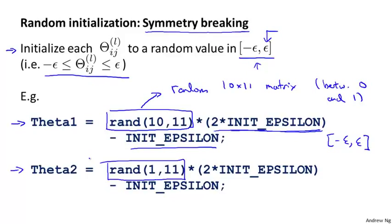To summarize, to create a neural network, you should randomly initialize the weights to small values close to zero between minus epsilon and plus epsilon. Then implement backpropagation, do gradient checking, and use either gradient descent or one of the advanced optimization algorithms to try to minimize J of theta as a function of the parameters theta, starting from this randomly chosen initial value. By doing symmetry breaking, hopefully gradient descent or the advanced optimization algorithms will be able to find a good value of theta.